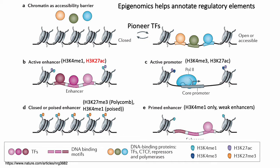Most of the histone modifications discussed are on the H3 histone, so the H3 prefix is often dropped for brevity. Part B illustrates that active enhancers are generally marked by K4 monomethylation as well as K27 acetylation, and those regions are generally associated with activating transcription factors binding to them. Active promoters, on the other hand, are typically defined by histone marks like K4 trimethylation and K27 acetylation, and at promoter sites, you also have Pol II binding to them.